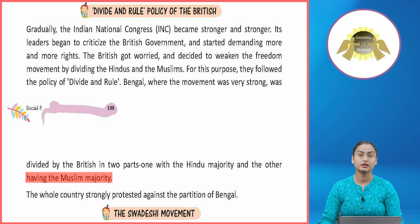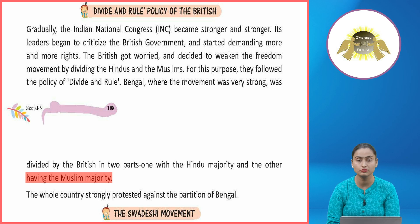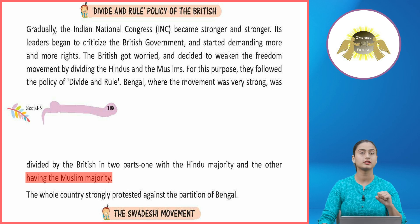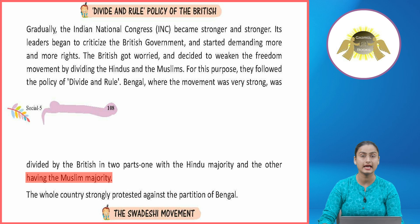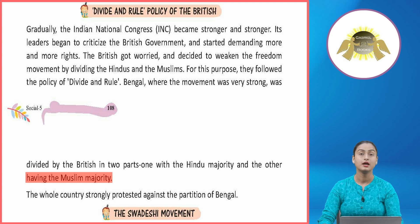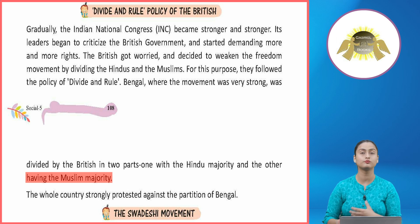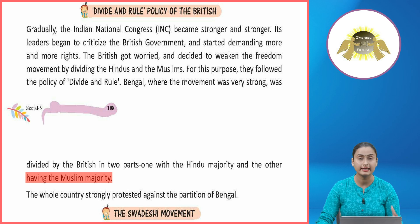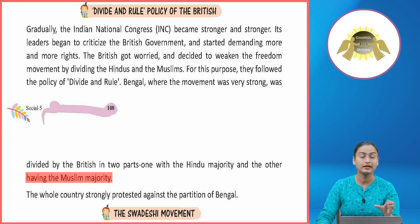Jaise hi Indian National Congress ka formation hua, dheere dheere logo ne British goods, British institutions, aur unki rules ko boycott karna start kar diya. Us point par pahunchne ke baad Britishers ko laga ki humein aisa kuch karna padega ki yeh log waapas alag alag ho jayein. Unhone Divide and Rule policy ki sthaapna ki — yaani logo ko baato aur phir rule karo. Bengal mein unhone Hindu aur Muslim groups ko divide kara diya, jis se Indian National Congress bhi dheere dheere divide hona start ho gayi.